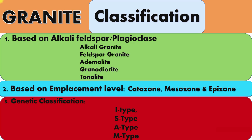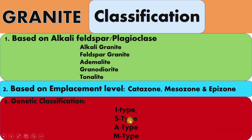The third type of classification is the genetic classification. Granites are divided into I-type, S-type, A-type, and M-type. I-type granites have igneous rocks as their source and are typically called metaluminous granites. S-type granites have sedimentary rocks as their source and are also called peraluminous granites.